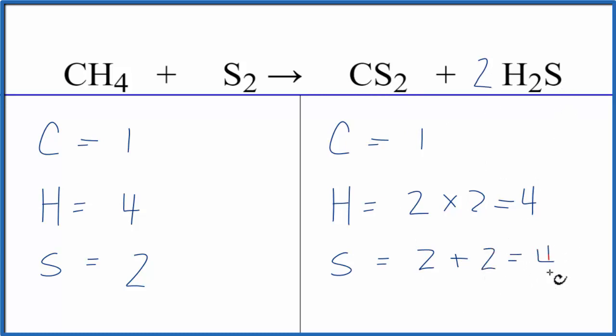So we have four sulfurs, and that really helps us because sulfur by itself here, two times two, that would give me the four to balance those. So I'll put a two in front of the S2. Two times two, that gives me four. And this equation is balanced.